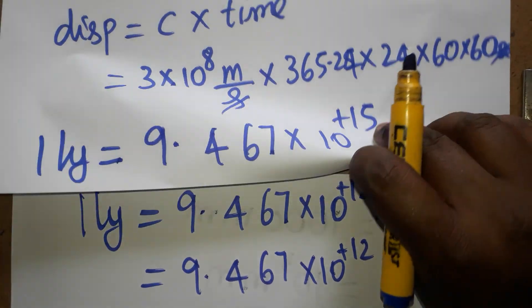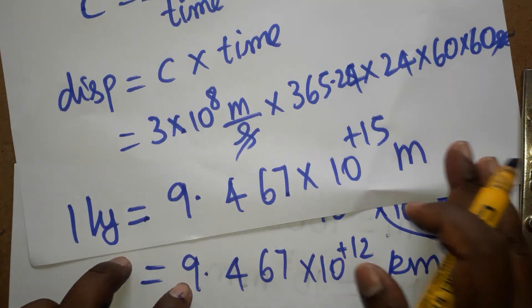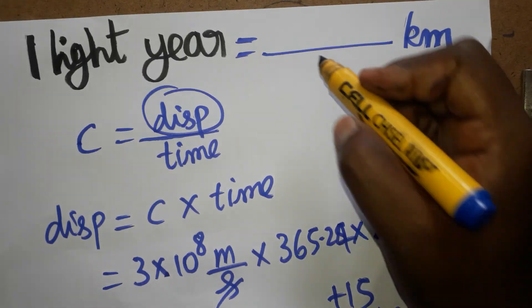So finally we got one light year is equal to dash kilometer. So that is called 9.467 into 10 power plus 12 kilometer.